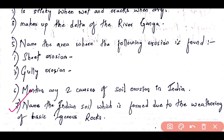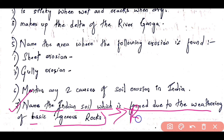Question 7: Name the Indian soil which is formed due to the weathering of basic igneous rocks. The answer is black soil. This whole chapter has been covered as a revision here. Other questions will come in Part 2, so do follow the videos. If you have any doubts, comment below. That's all for this video — thank you so much for watching.